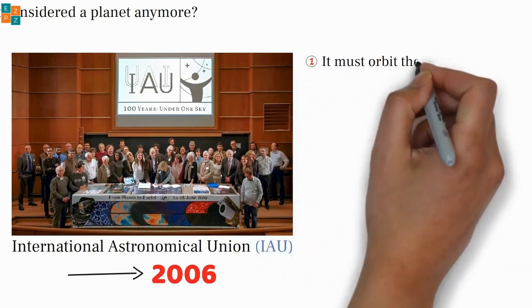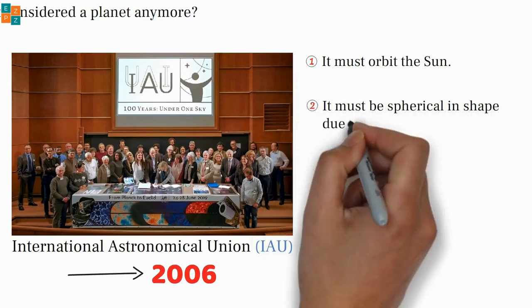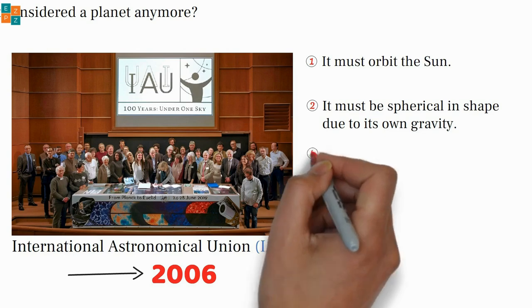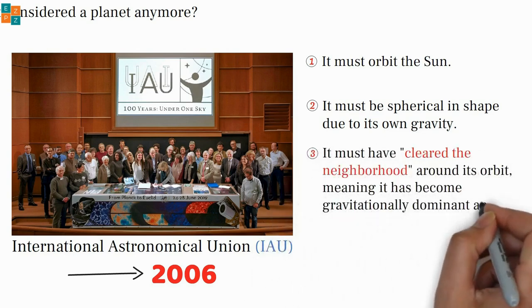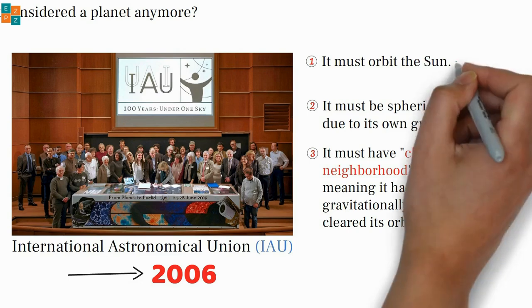First, it must orbit the Sun. Second, it must be spherical in shape due to its own gravity. Third, it must have cleared the neighborhood around its orbit, meaning it has become gravitationally dominant and cleared its orbit of other debris.